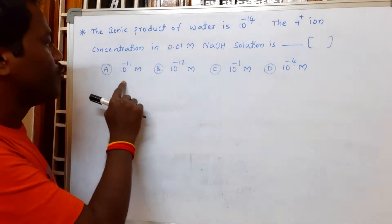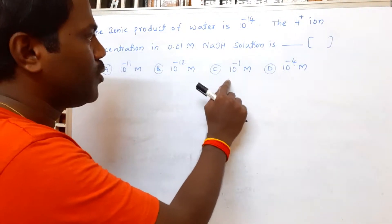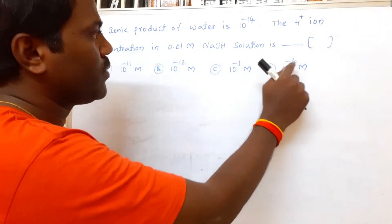They are given four options: option A, 10^-11 molar; option B, 10^-12 molar; option C, 10^-1 molar; option D, 10^-4 molar.